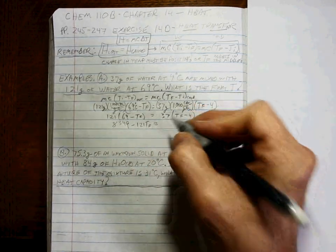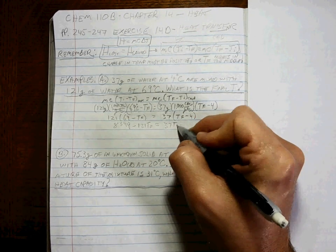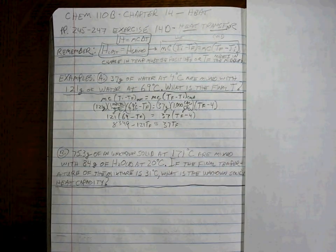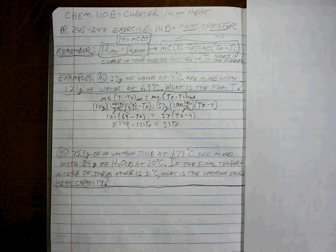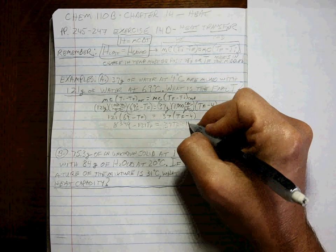121 times 69 minus 121 T_f. 37 times T_f is 37 T_f. 37 times negative 4 is negative 148.